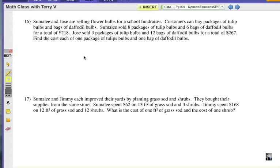Sumile and Jose are selling flower bulbs for a school fundraiser. Customers can buy packages of tulip bulbs and bags of daffodil bulbs. Sumile sold eight packages of tulip bulbs and six bags of daffodil bulbs for a total of $218. Jose sold three packages of tulip bulbs and 12 of the daffodil bulbs for a total of $267. Based on that information, let's find the cost of each one package of tulip bulbs and one bag of daffodil bulbs.